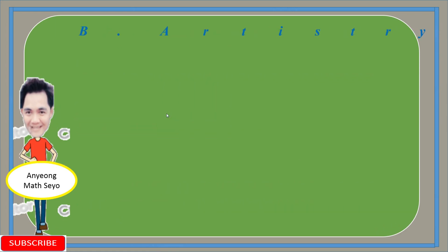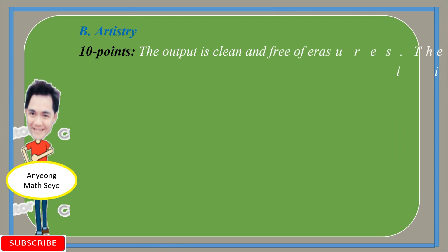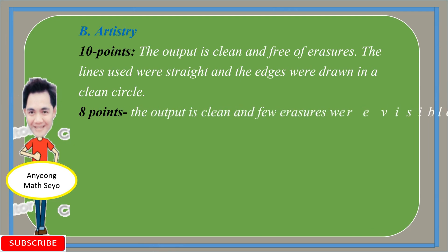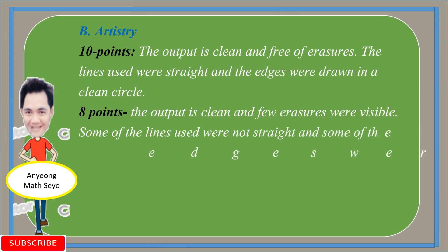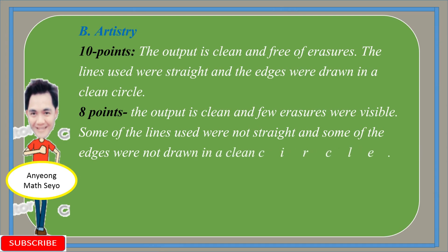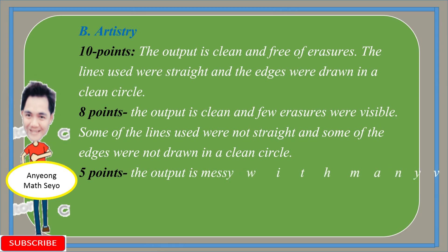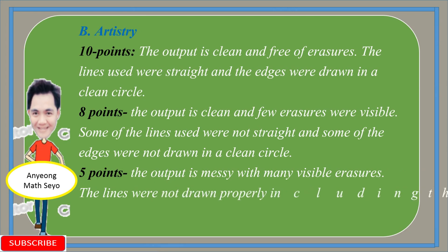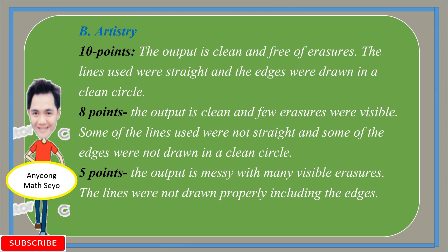The second criterion is Artistry. You will get 10 points if the output is clean and free of erasure, the lines are straight, and the edges are drawn in clean circles — use rulers and other tools. You will get 8 points if the output is clean with few visible erasures, some lines are not straight, and some edges are not drawn in clean circles. You will get 5 points if the output is messy with mainly visible erasures and lines and edges not drawn properly.